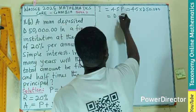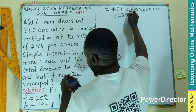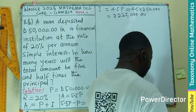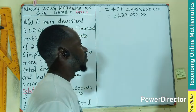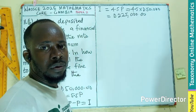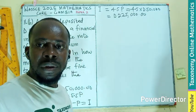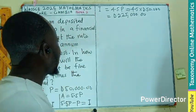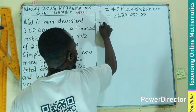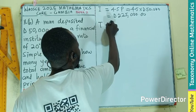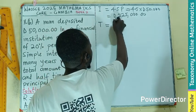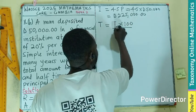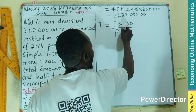4.5 times 50,000 gives us 225,000. That is our interest. Now, remember, to find time, the formula is: Time equals Interest times 100, divided by Principal times Rate.